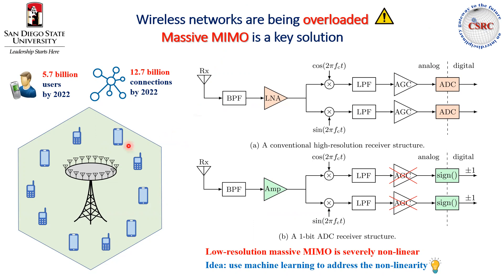And then Massive MIMO comes in as one of the key solutions. The idea of Massive MIMO is to use a large number of antennas at the base station in order to serve many users at the same time. In figure 8, you can see it is a conventional receiver structure for one antenna. And when we scale up this structure to many antennas at the base station, the hardware cost and power consumption become critical issues.